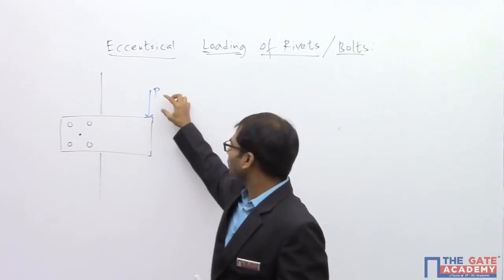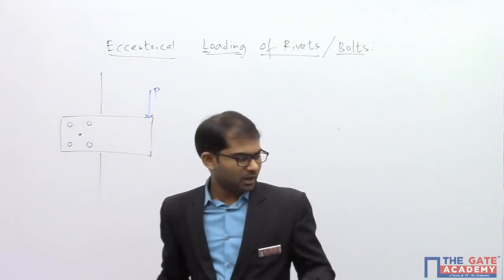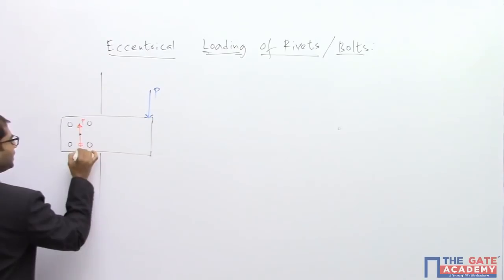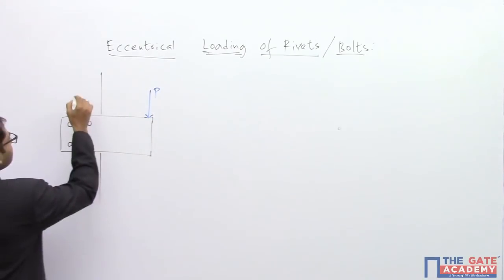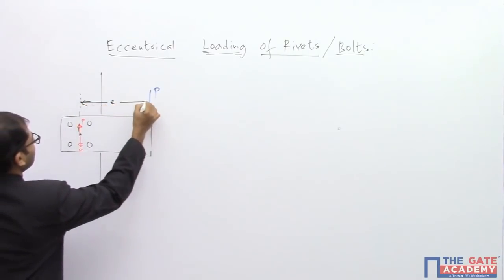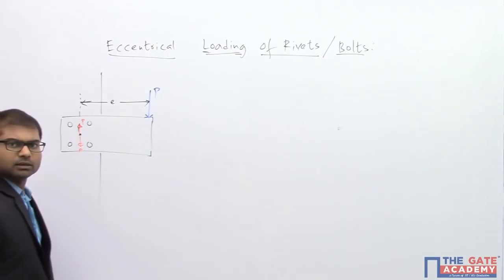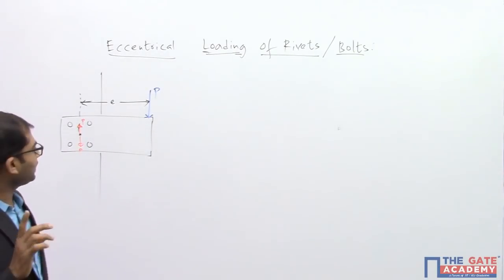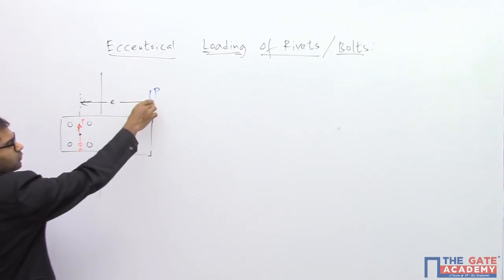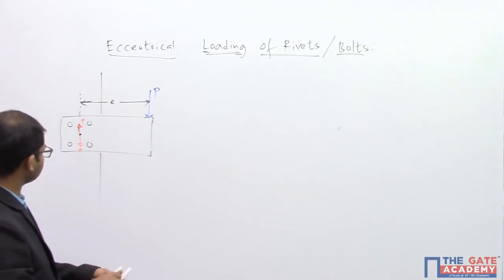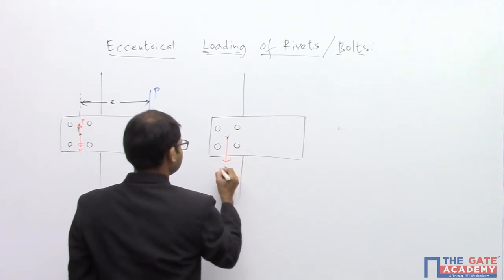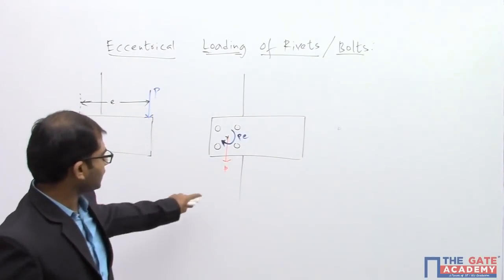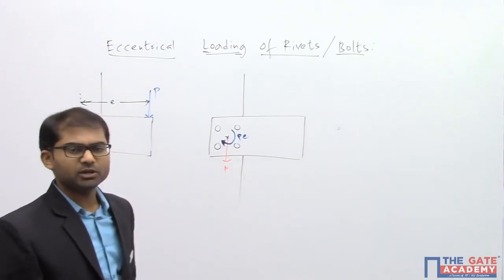Let's see the effect of this force P by transferring the load from its point of application to the centroid. I am putting an equivalent opposite force here — P upward and P downward — to transfer the load. Let's take this eccentric distance as e. This upward force and downward force make a couple of magnitude P×e, and that couple's direction is clockwise. So the effect of force P on the centroid of the rivet arrangement is given by a direct force P and a clockwise moment P×e.